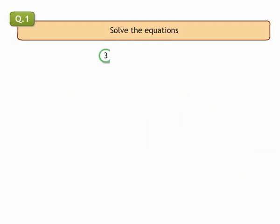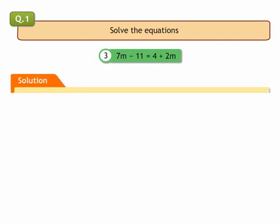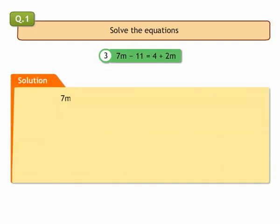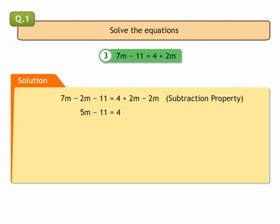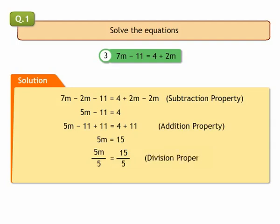3. 7m minus 11 is equal to 4 plus 2m. To eliminate m on right side, we subtract 2m from both sides of the equation. We get 5m minus 11 is equal to 4. Adding 11 on both sides of the equation, we get 5m is equal to 15. Dividing both sides of the equation by 5, we get m is equal to 3.